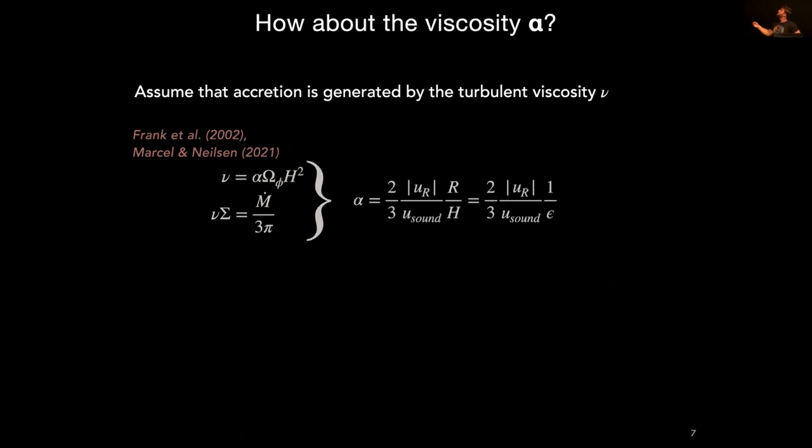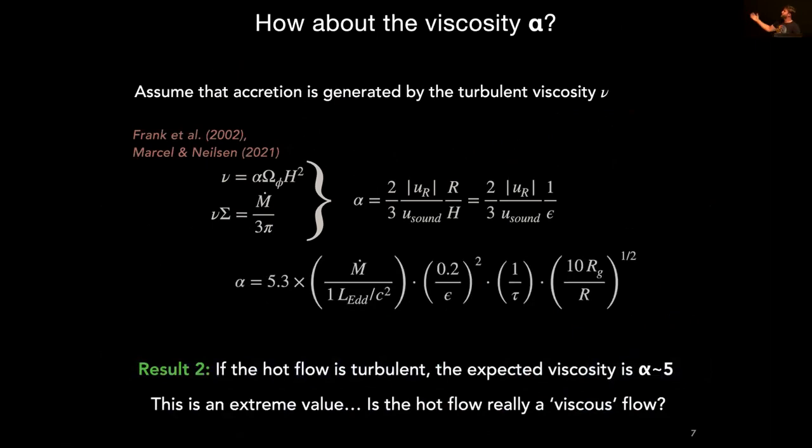Now, if you go back to alpha, so if you assume a viscous flow, you can, again, link alpha to the accretion speed in the accretion flow by those two equations that, again, are everywhere in accretion flow physics. And if you do that, you get an alpha of five, exactly the one that Matthew showed, by the way. You get an alpha of about five. So the problem now is that, well, you can't really do that with a viscous flow, can you? Because alpha is supposedly around 0.1, 0.5 sometimes in some simulations, but not much higher. So you have a big problem because your hot flow cannot really be viscous.